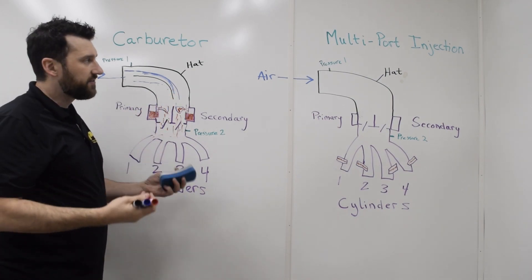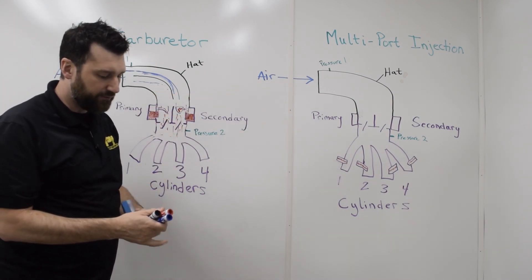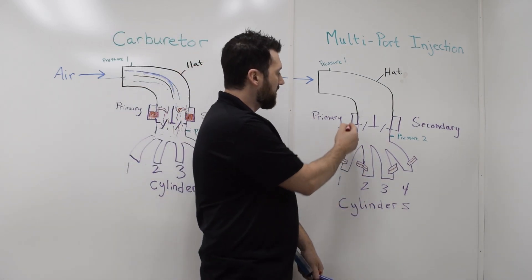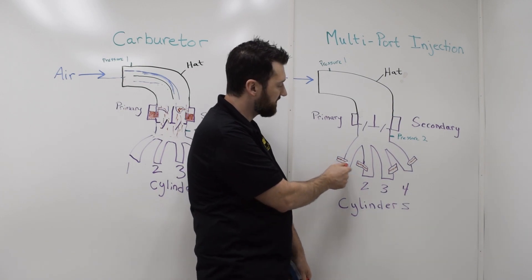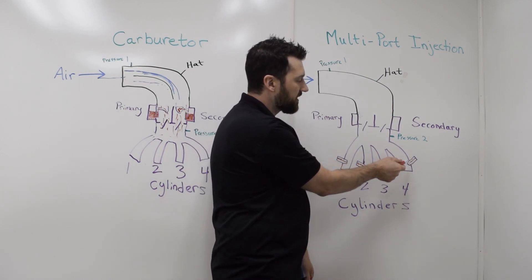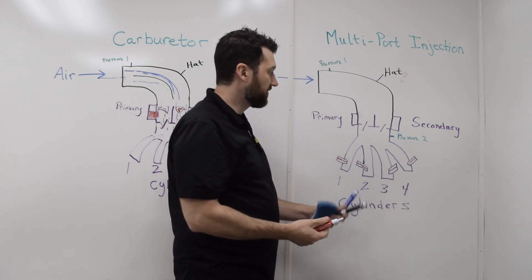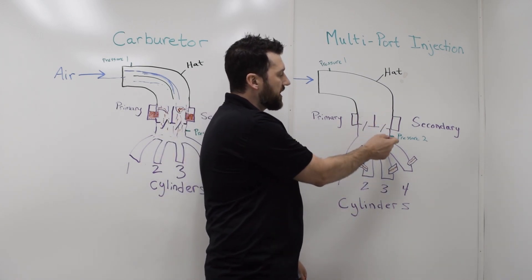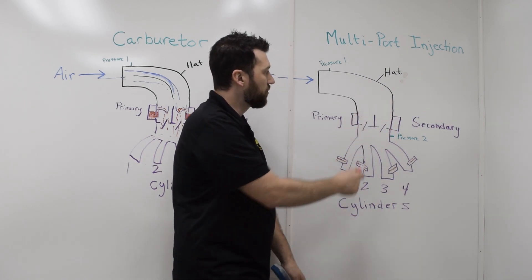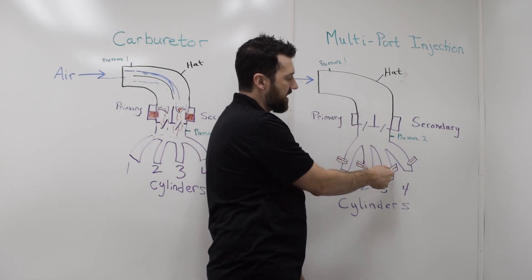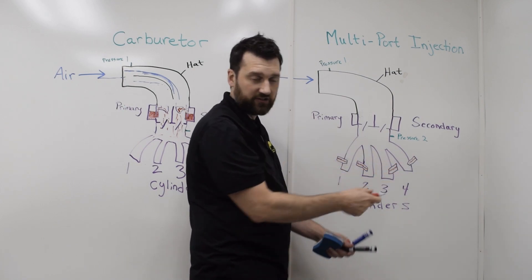What we wanted to do is, in multipoint fuel injection, because the fuel is no longer being mixed with air up here above the throttle plates, the fuel is now being injected directly into the intake runners, very close to where the intake valve is. So now we're not worried about rich secondaries and lean primaries. We just have air flowing through here and then the fuel injector controls how much fuel is injected into each cylinder.